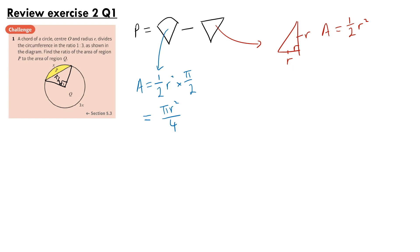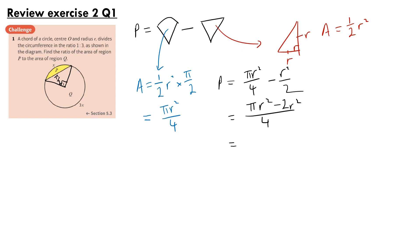So the area P equals pi R squared over 4 minus R squared over 2, which equals pi R squared minus 2R squared over 4, and factoring out R squared, that is R squared times (pi minus 2) over 4.